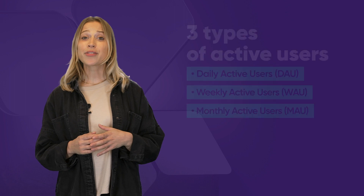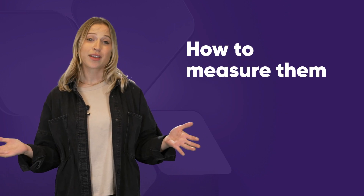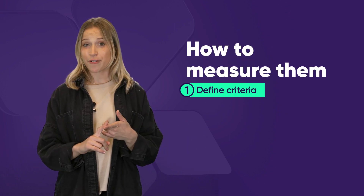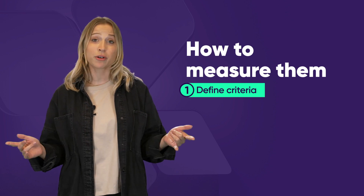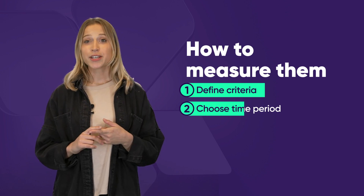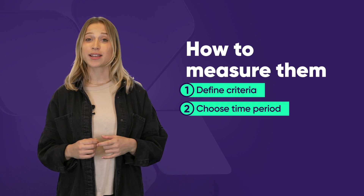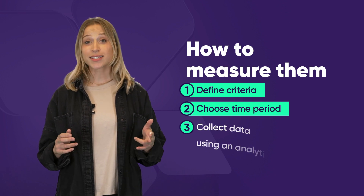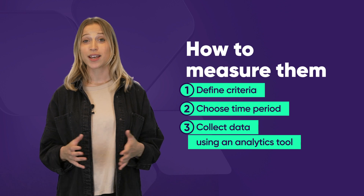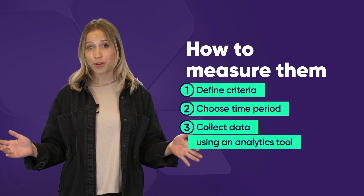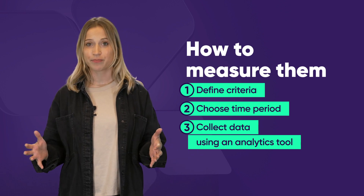Now that you know why active users matter, how do you measure them? First, define the criteria for an active user, like an account scroll or login. Second, choose the time period: daily, weekly, or monthly. Then lastly, collect the data using your analytics tool of choice to sum up the number of unique visitors who meet your active user criteria.